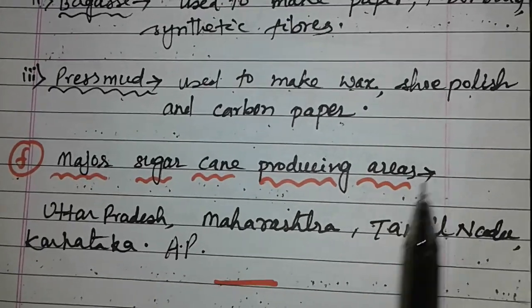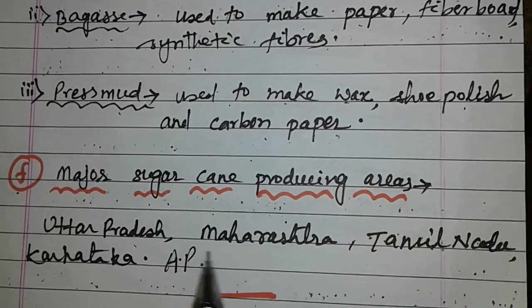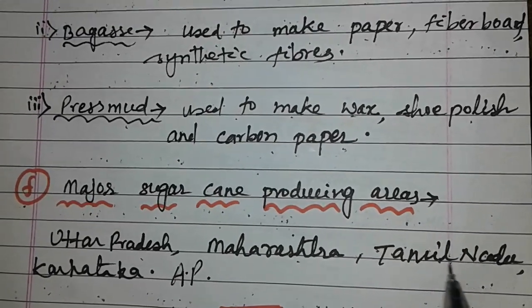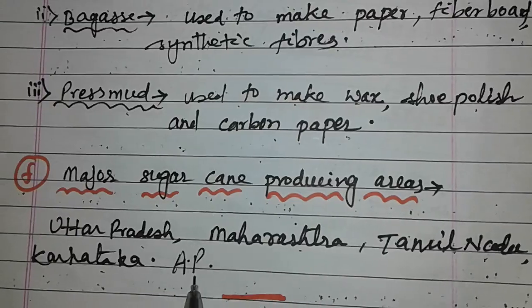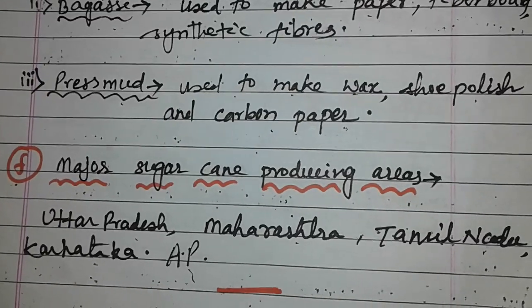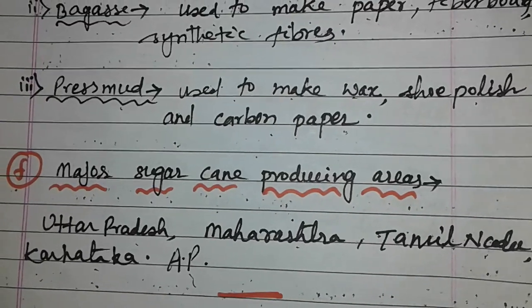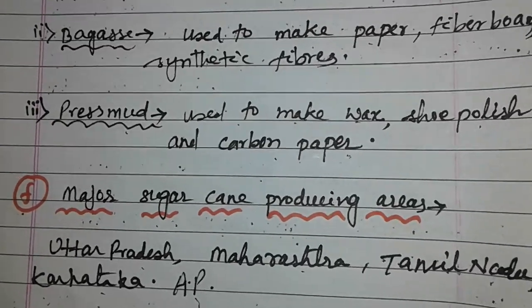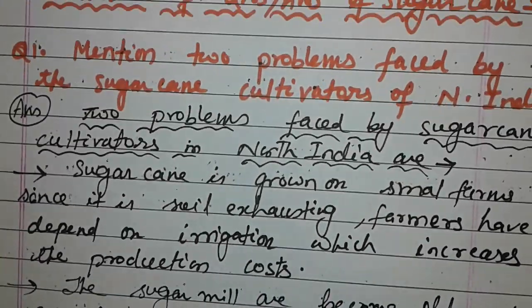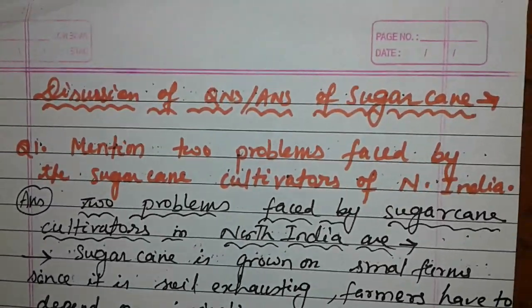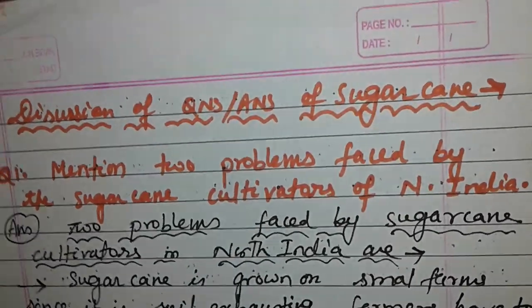Major sugar-producing areas in our country: Uttar Pradesh, Maharashtra, Tamil Nadu, Karnataka, and Andhra Pradesh. These are all the major sugarcane-producing areas. I have already discussed some questions while teaching the chapter.